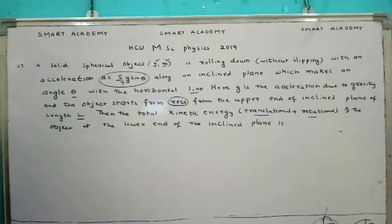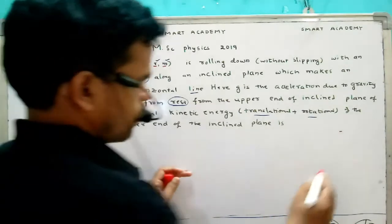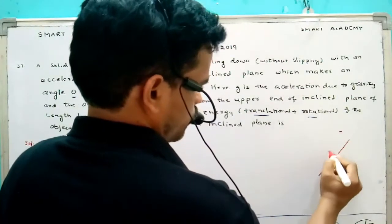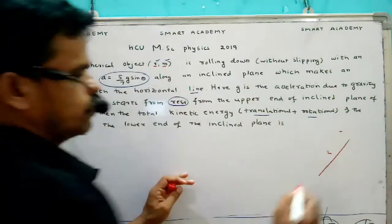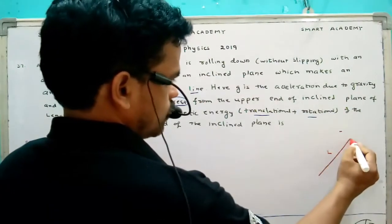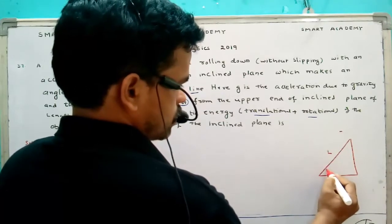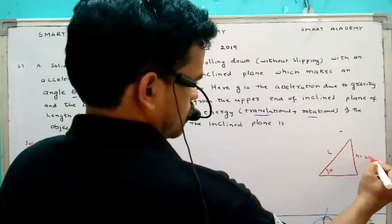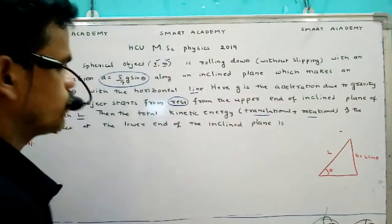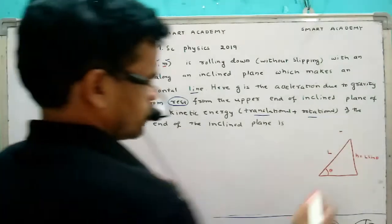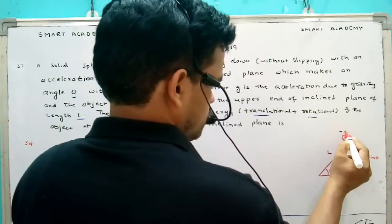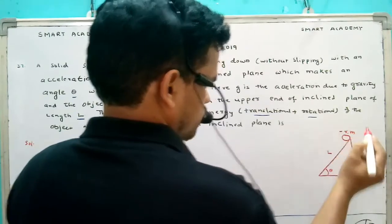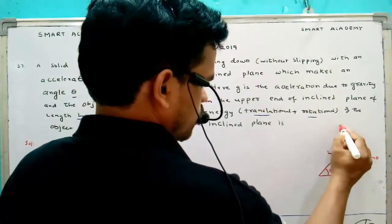Just look at the question. So now I move for solution. So here an inclined plane, the length of the inclined plane L, the inclination angle is theta, height of the inclination that is L sine theta. Okay, here one spherical object, one spherical object which has radius r and mass small m.